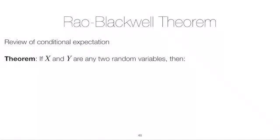Let's take a look at a theorem about conditional expectations that we'll end up using in the proof of the Rao-Blackwell theorem. This theorem says that if you have two random variables X and Y, then you can write the expected value of X in what seems like a convoluted way, but a way that will turn out to be useful: as the expectation of the expectation of X given Y.